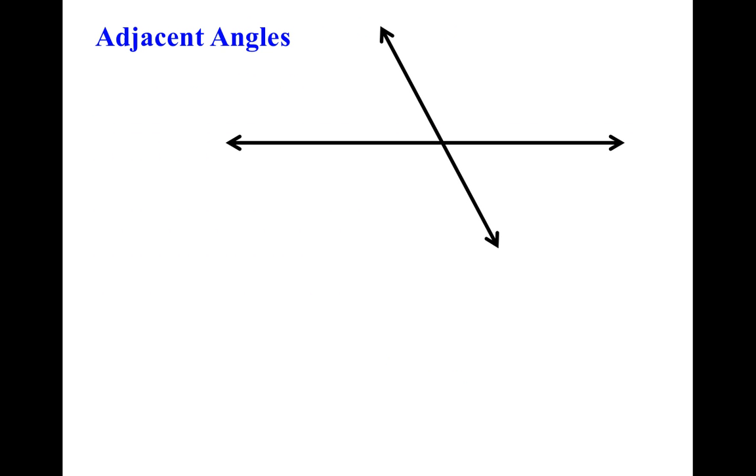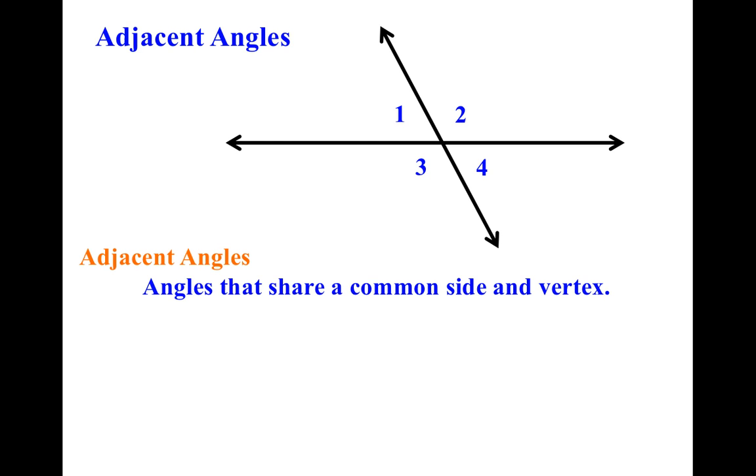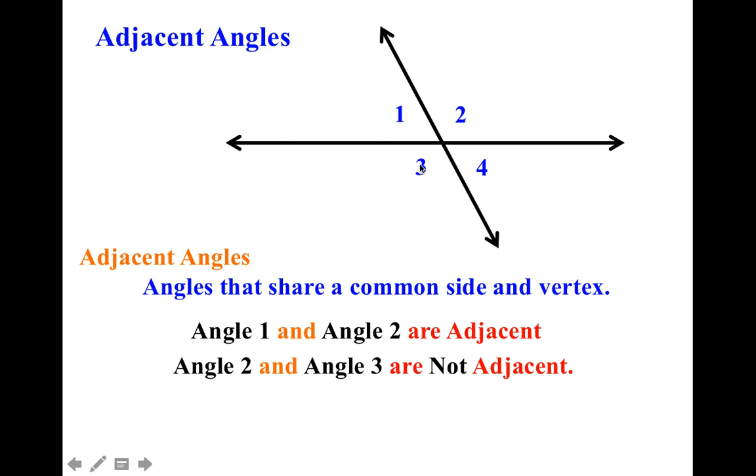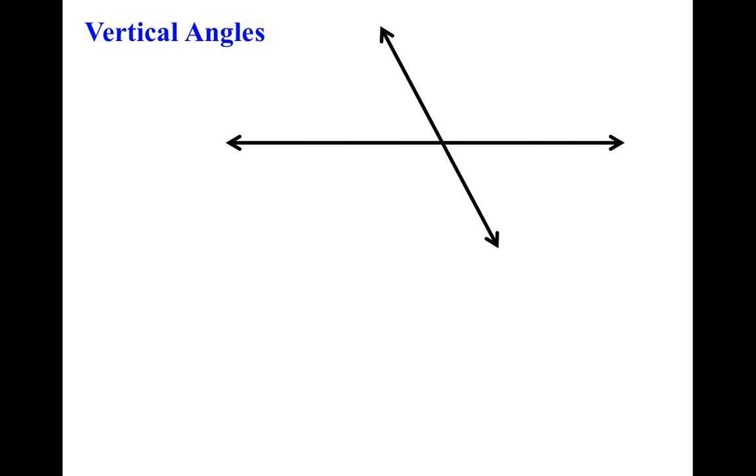Okay. Next, adjacent angles. Adjacent angles are angles that are right next to each other. Fancy way? They share a common side and vertex. Notice angles 1 and 2. They share a vertex and they share a common side. And they are adjacent. Angles 1 and 3 would be adjacent. Angles 2 and 4 would be adjacent. Angles 3 and 4 would be adjacent. But I hope you notice that angles 2 and 3 are not adjacent. Sure, they share a common vertex, but they do not share a common side.